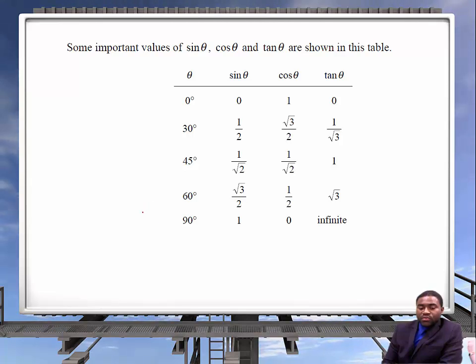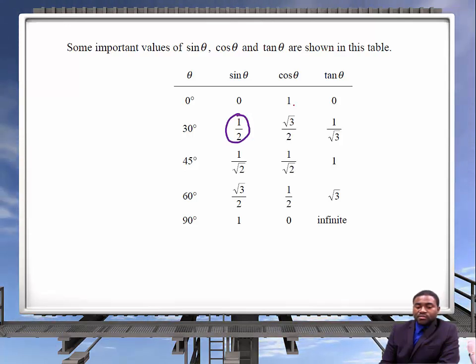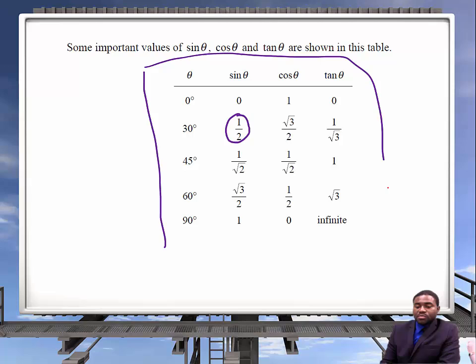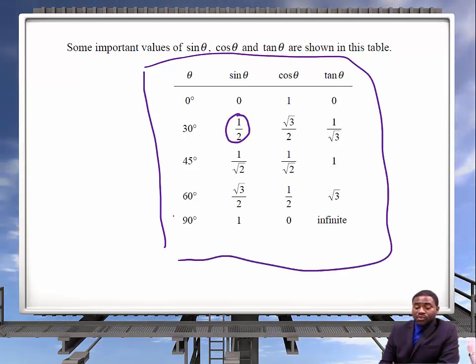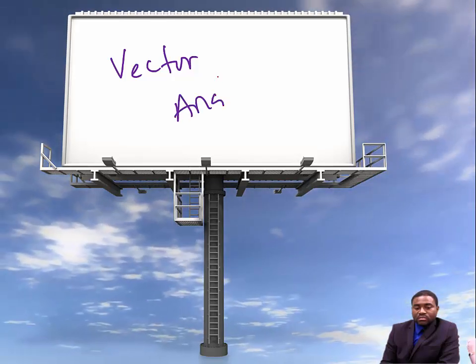Now here are some important values for sine, cosine, and tangent that you should know. For example, sine of 30 degrees is one half, cosine of 30 degrees is root 3 over 2, and tangent of 30 degrees is 1 over root 3. This table is important, but you don't need to memorize it as it will be provided in every test. Thank you so much — I appreciate your time. Our next video will be on vector analysis.